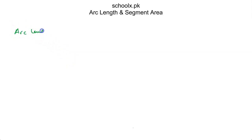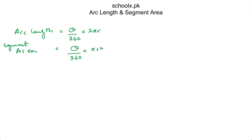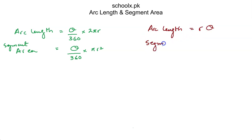So we now have two sets of formulas. When the angle is in degrees: arc length = (θ/360) × 2πr, and segment area = (θ/360) × πr². When the angle is in radians: arc length = r × θ, and segment area = ½r²θ, where θ is the angle of that respective segment.